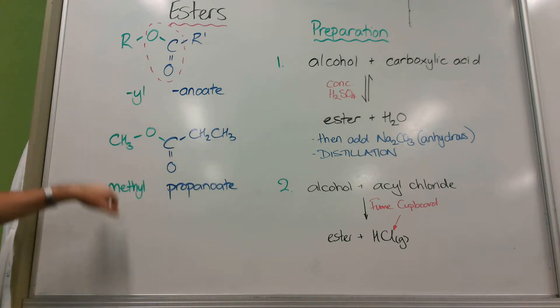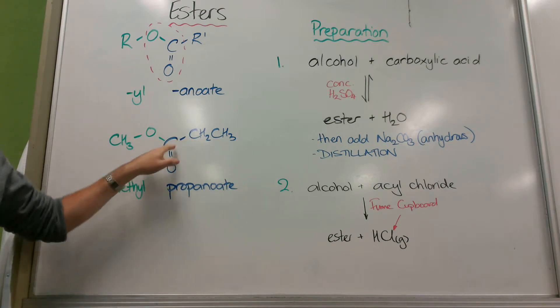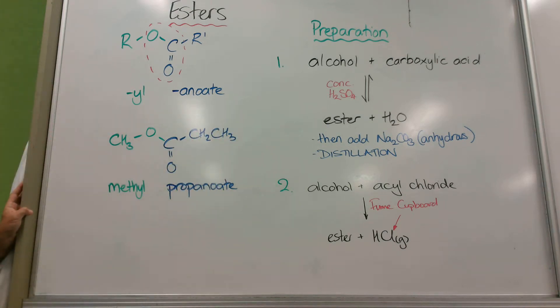If I had two carbons here, ethyl. Three, propyl and so on. If I had one here, it's methanoate. Two carbons, ethanoate, propanoate, one more would be butanoate and so on.